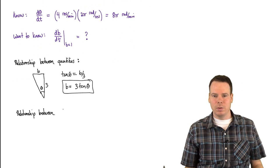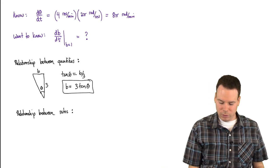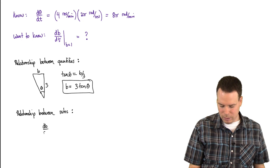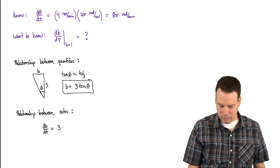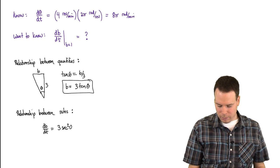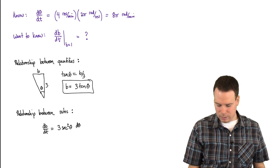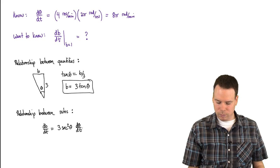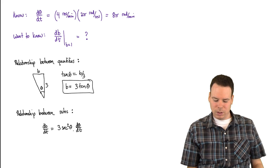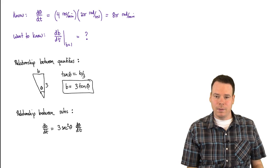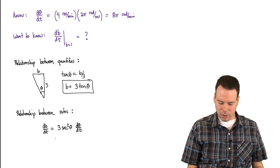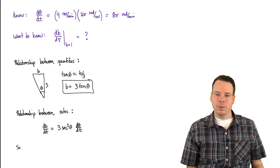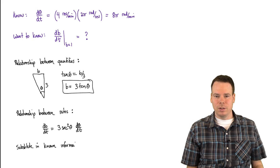Now we want a relationship between the rates of change. Differentiating through, we get db/dt = 3·sec²(θ)·dθ/dt. Since theta is a function of t and we're differentiating with respect to t, tan(θ) is a composition of the tangent function and theta, so we had to use the chain rule there.